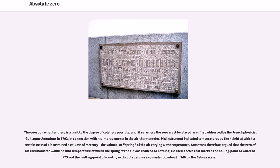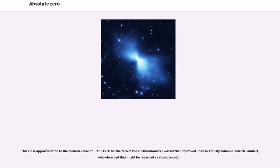...was first addressed by the French physicist Guillaume Amontons in 1702, in connection with his improvements in the air thermometer. His instrument indicated temperatures by the height at which a certain mass of air sustained a column of mercury, the volume, or spring of the air, varying with temperature. Amontons therefore argued that the zero of his thermometer would be the temperature at which the spring of the air was reduced to nothing. He used a scale that marked the boiling point of water at plus 73 and the melting point of ice at plus 51 and a half, so that the zero was equivalent to about minus 240 on the Celsius scale. This close approximation to the modern value of minus 273.15 degrees Celsius for the zero of the air thermometer was further improved upon in 1779 by Johann Heinrich Lambert, who observed that minus 270 degrees Celsius might be regarded as absolute cold.